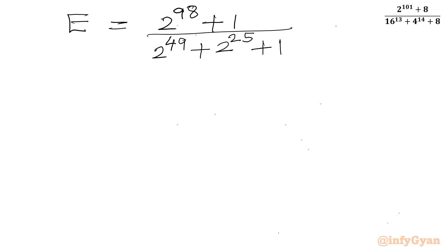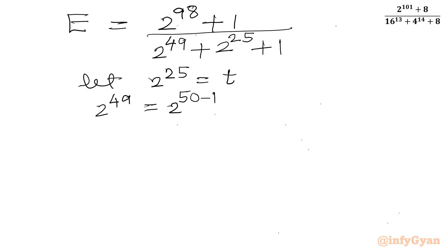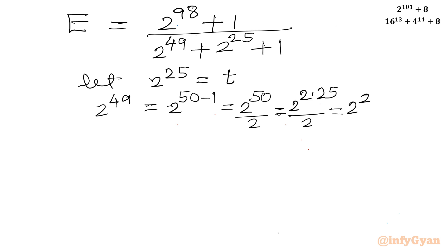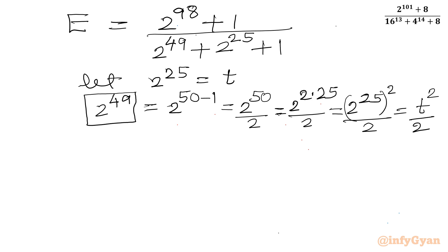Now I will use substitution. Let 2 power 25 equal t. Then 2 power 49 equals 2 power (50 minus 1), which is 2 power 50 divided by 2, giving us t squared over 2. So in place of 2 raised to the power 49, we write t squared by 2.